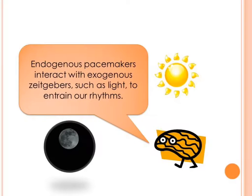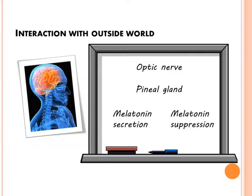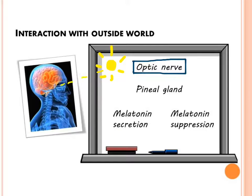Endogenous pacemakers interact with the outside world. External time-giving cues such as light are called exogenous zeitgebers, and they enable circadian rhythms to be entrained or reset. This interaction is made possible because the SCN is connected to the visual system via the optic nerve, and this allows the amount of light entering the eye to be registered and processed.